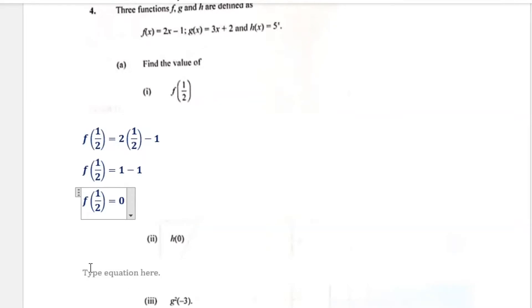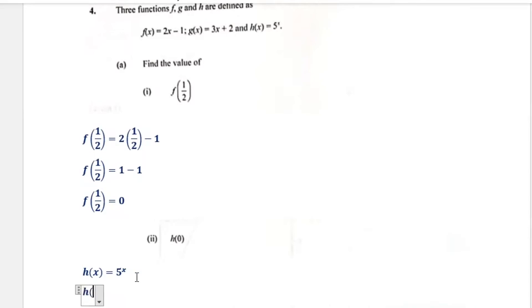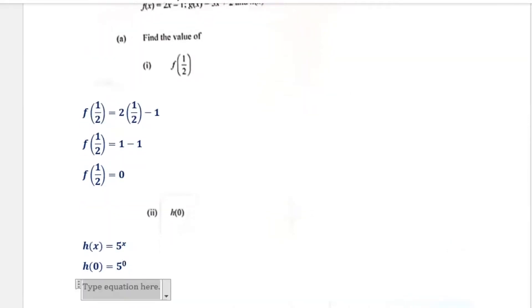Now we have h(0). Anywhere in our h(x) expression that we see x, we replace it with zero. h(x) = 5 raised to the power of x, so we replace x with zero. From indices, any number raised to the power of zero is one. So 5 raised to the power of zero equals one.